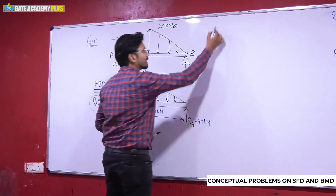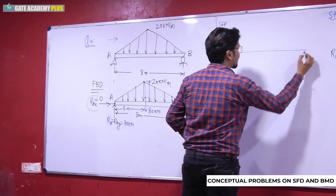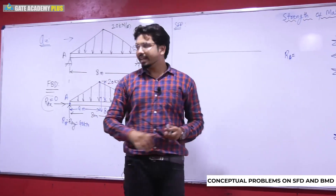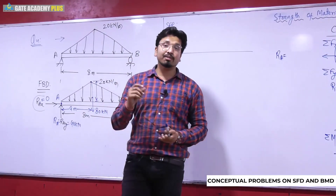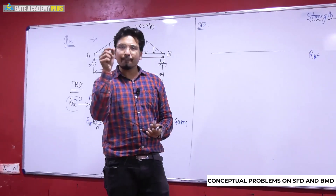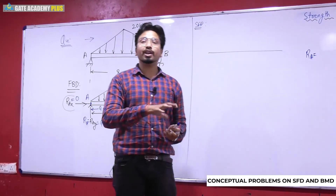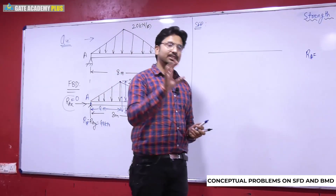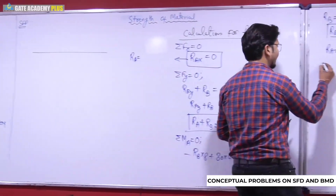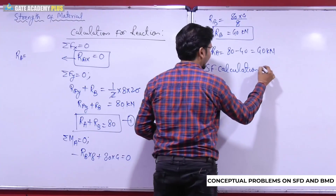Reactions आ गए, free body diagram complete हुआ। अब shear force and bending moment diagram बनाएंगे। Recall करना है — यह uniformly varying load है। UVL के लिए जो shear force diagram बनता है उसका nature parabolic होगा और bending moment diagram cubic curve होगा। इस concept को ध्यान में रखते हुए आगे बढ़ते हैं।